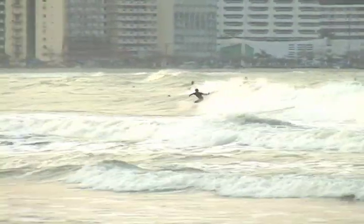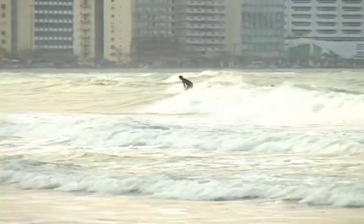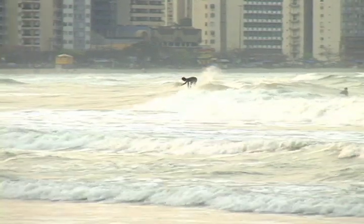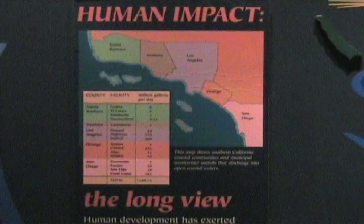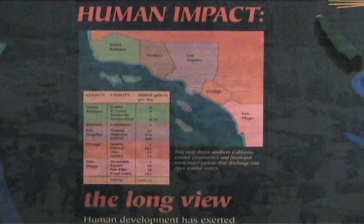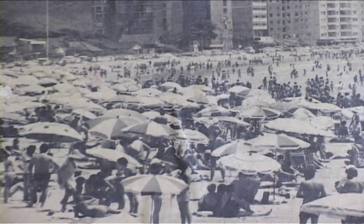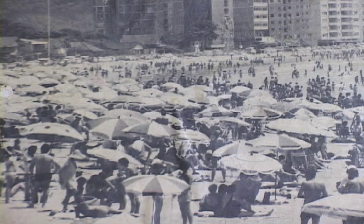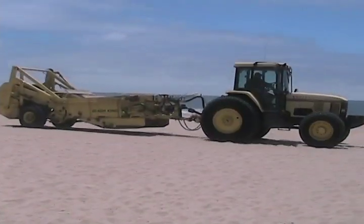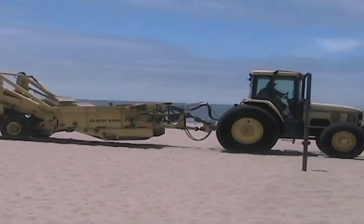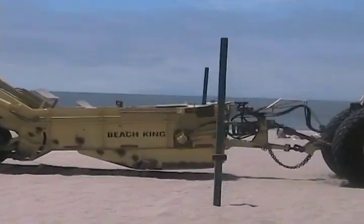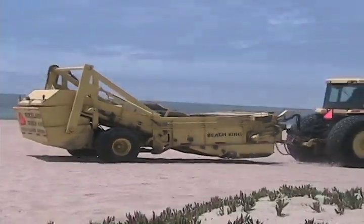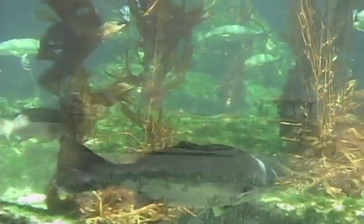The coastal zone is extremely important and is showing vulnerabilities. The human predatory interference in this biodiversity exploits the resources and threatens the marine food chain.